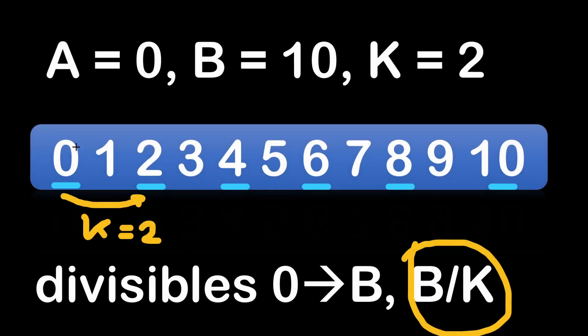There is a different way of doing this. But first we have to understand a couple of points here. Imagine A equal to 0 and B equal to 10 with K equal to 2. And we are trying to find the number of divisibles between 0 and B. In other words we are trying to find the number of steps of 2 that we can find between 0 and 10.